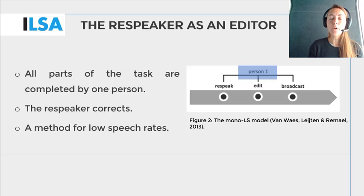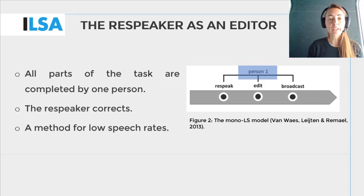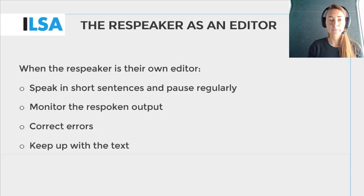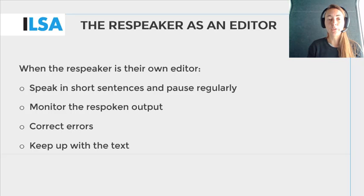This figure illustrates that all parts of the respeaking task are completed by one person — the corrections are made by the respeaker. In this example, the respeaker takes on the task of the editor. This method can be applied to simple programs with low speech rates. When a respeaker is their own editor, they should try to speak in short sentences and pause regularly. As the respeaker pauses, the respoken output is released on screen, so the respeaker should monitor their output to check for errors.